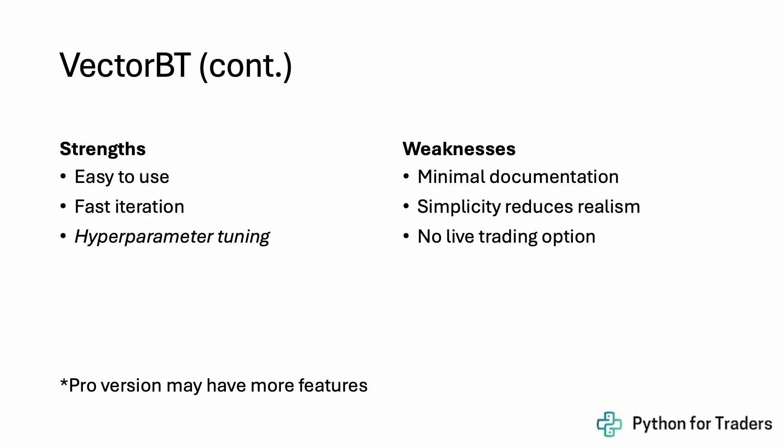On the strengths side: it's very easy to use, very good for fast iteration, and really excellent for hyperparameter tuning when you have a strategy and want to figure out the best configuration of parameters. Some weaknesses: it doesn't have much documentation, so you may have to read the source code. The simplicity can reduce realism compared to more detailed solutions, though it also means you won't get bogged down in details. Lastly, there are no live trading options, so you'd have to code your algorithm separately. The pro version may have more features — I'm only talking about the free version at the time of recording.